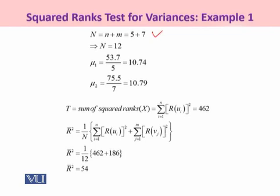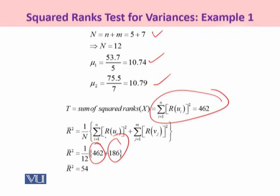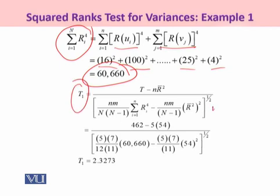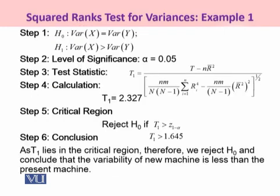Now, capital N is sum of the two sample sizes, 5 plus 7, capital N is 12. μ₁ and μ₂ have already been calculated. Now you have this sum of 462, which is the sum of the squared ranks for u, and 186 is the sum of the squared ranks for v. Combining them, dividing by 12, you got 54. In this way, you have sum of the ranks to the 4th power, and all the ranks under u and under v, you have the sum of the ranks, you got 60,660. Then you have to calculate T₁ by using this formula. So plugging all the values that you have calculated so far, you will be calculating T₁ as 2.3273.